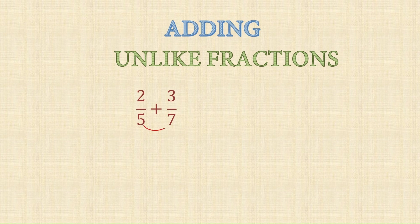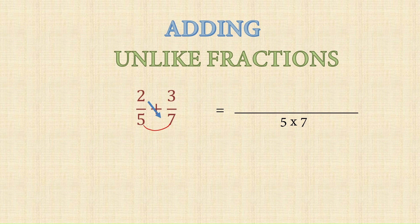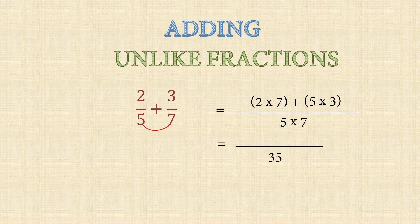In the butterfly method, multiply the two denominators and write it as the denominator. For the numerator, use the cross products: numerator of the first fraction times denominator of the second — that is 2 into 7, giving 14. Then denominator of the first times numerator of the second — that is 5 into 3, giving 15. So the answer is 14 plus 15 upon 35, which equals 29 upon 35.